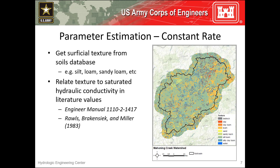When estimating a constant loss rate for your watershed, remember my recommendation from the previous video. Don't use the actual parameter values from a soils database to estimate this parameter. Instead, get the surficial texture from the soils database and then relate that to published saturated hydraulic conductivity values for the predominant soils. In this image, over half of the subbasin of interest is covered by silt loam, so a decent place to start would be to use an estimate of the saturated hydraulic conductivity for silt loam and begin calibrating from there.